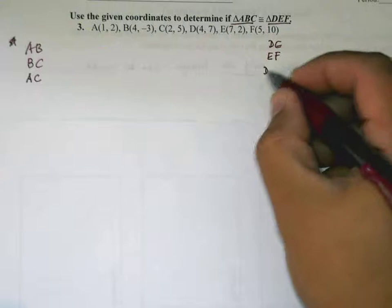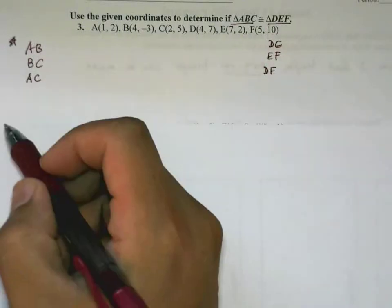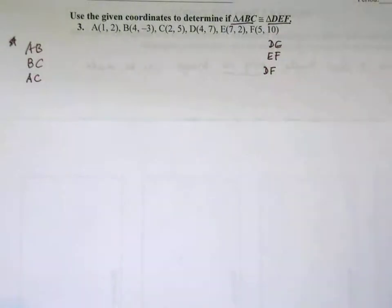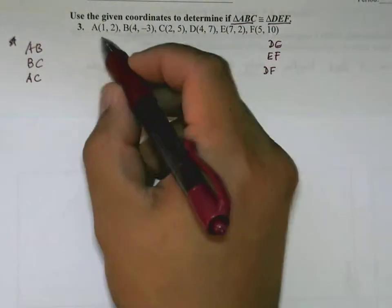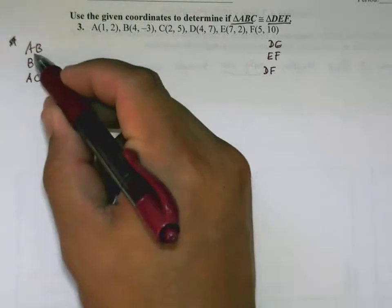Three sides of one triangle, three sides of the other triangle. We want to see if these sides are in fact congruent. If all three pairs of sides are congruent, then we can say the two triangles are congruent.